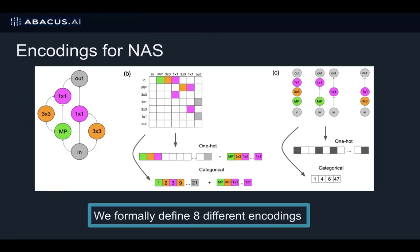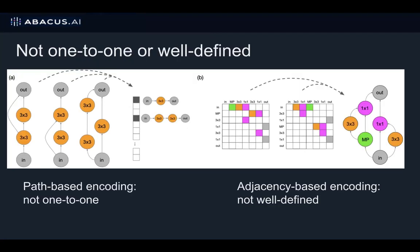We start by formally defining eight different encodings based on two paradigms: adjacency matrix-based encodings and path-based encodings. Four of them are shown here, which are one-hot and categorical variants. We note that the path-based encodings are not one-to-one functions, and for the adjacency matrix-based encodings, the inverse functions are not one-to-one. Because of this difference, many prior NAS algorithms unknowingly use encodings that are not compatible with other NAS algorithms.